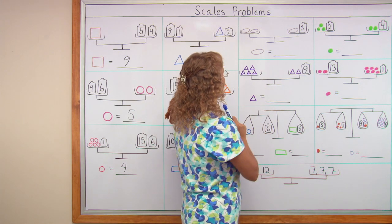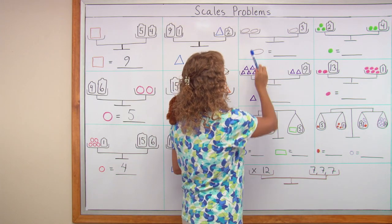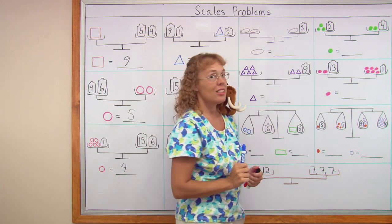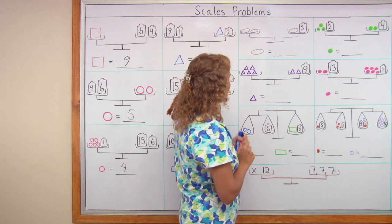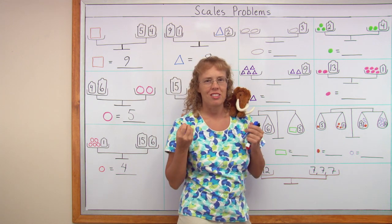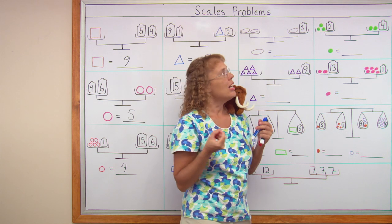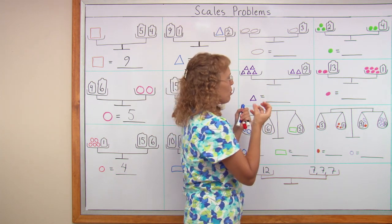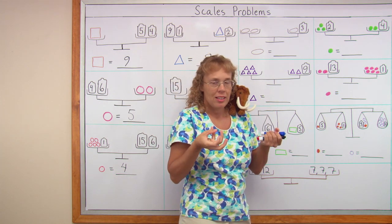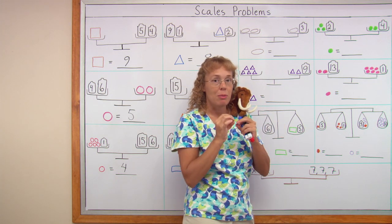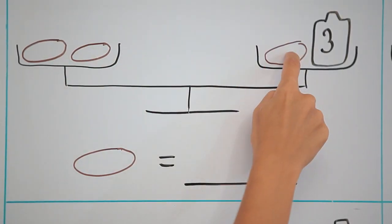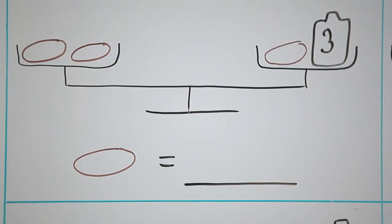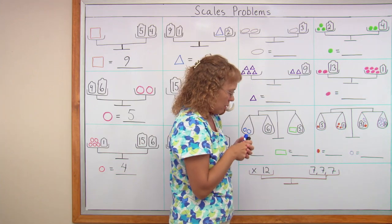Now over here is our first time of having the unknown on both sides. So that's a bit different. That's something new. And so the idea here, I'm going to show you a little trick that makes it much easier. And that is that if we take away from both sides the same thing, then the pan balance is still going to be balanced. The scales are still balanced. If I take away one oval from both sides, then it will still be balanced. Because I took away the same thing from both sides.